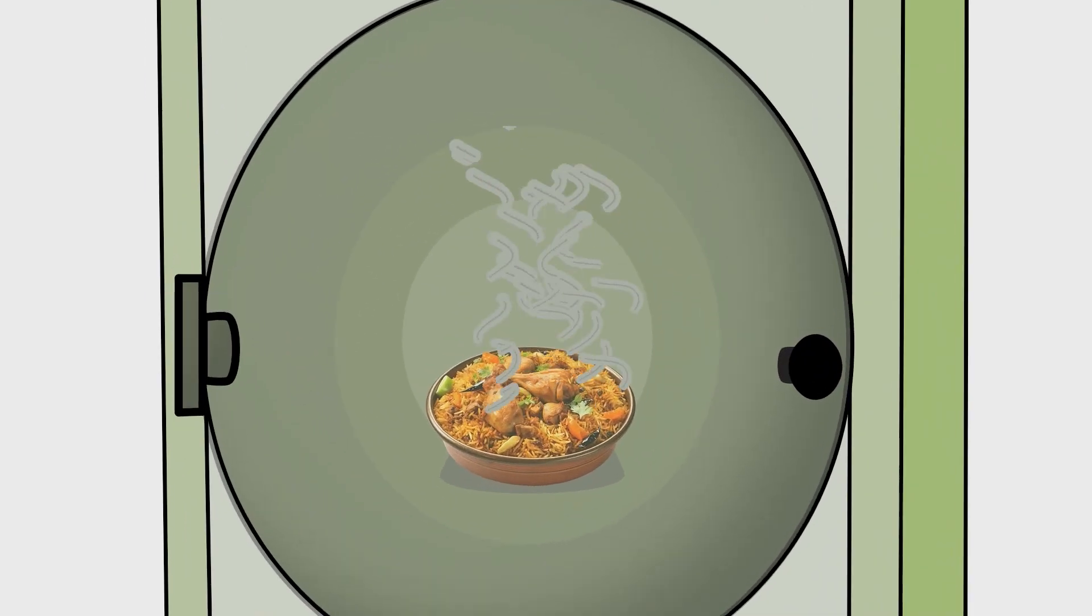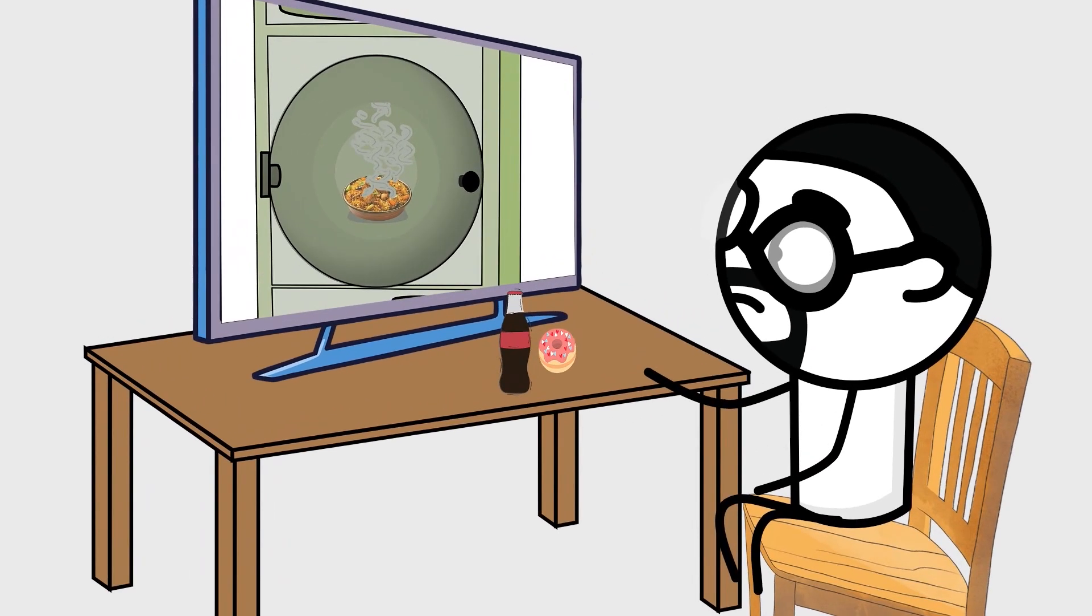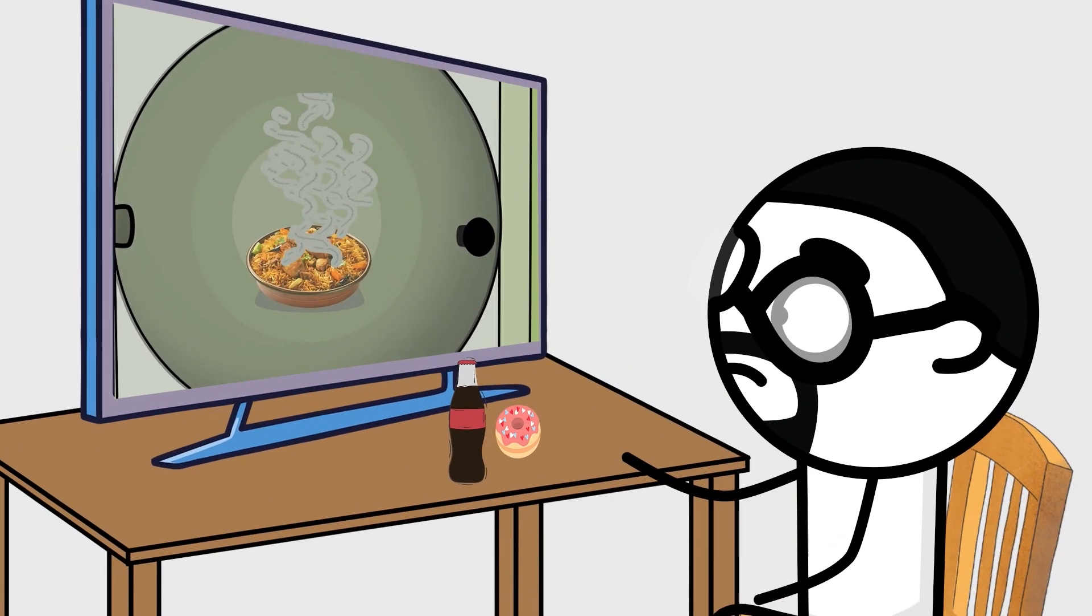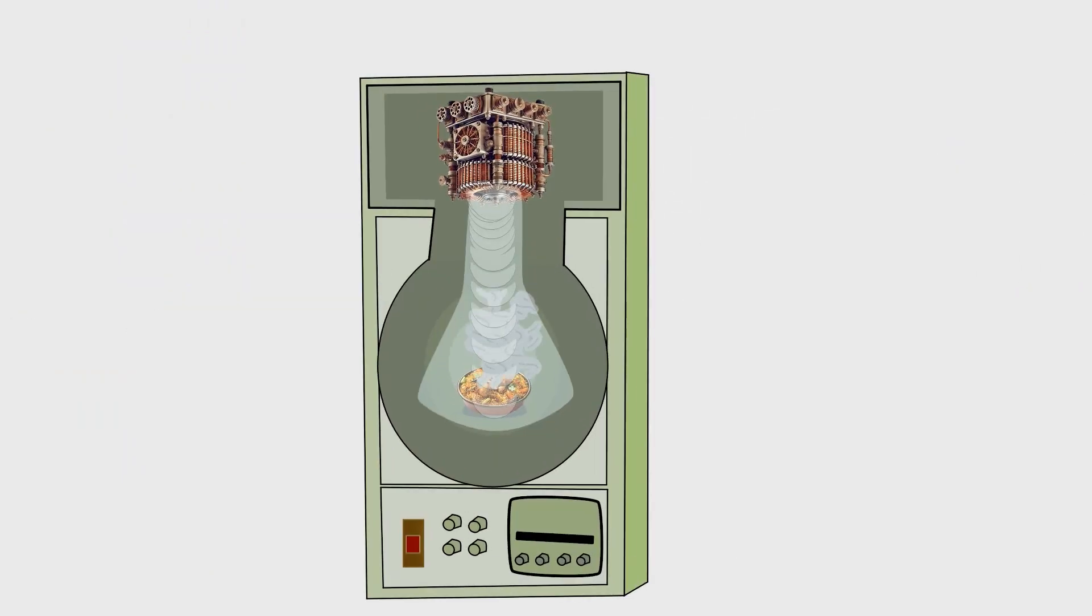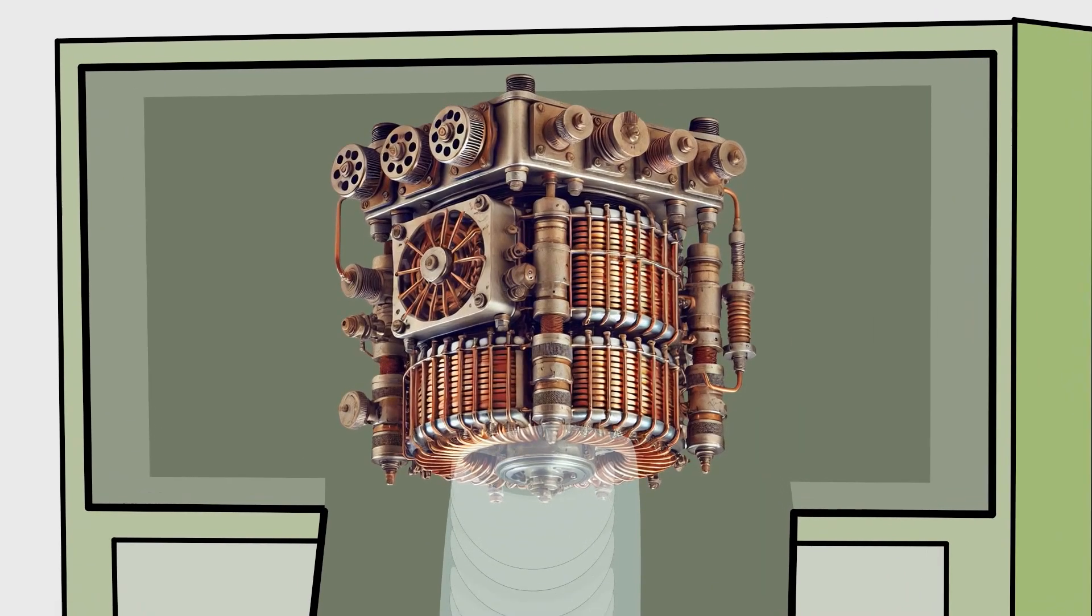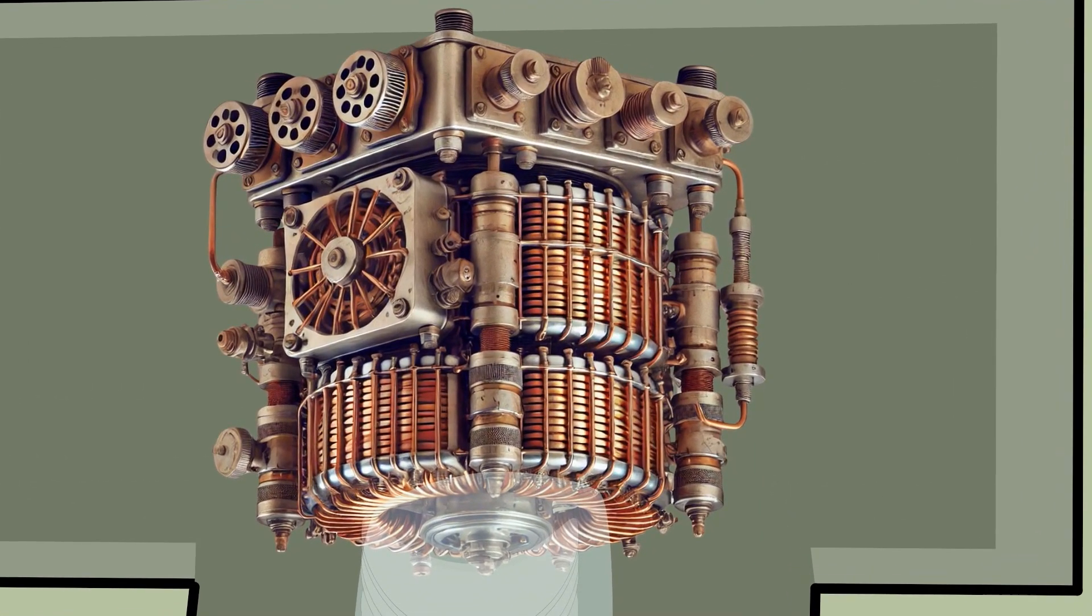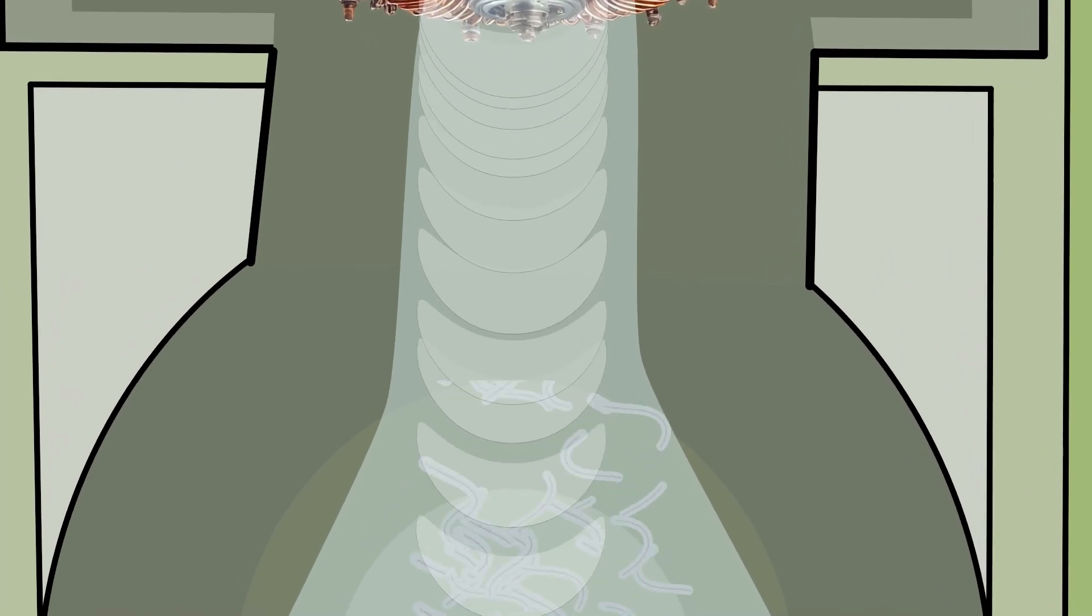So how does it actually work? All right, put on your safety goggles because we're about to do some science. With snacks. Inside that box, the magnetron, the true beating heart of the machine, generates a beam of microwaves.